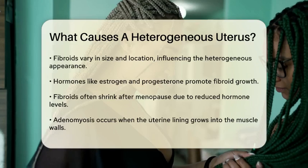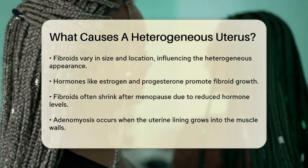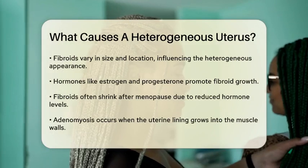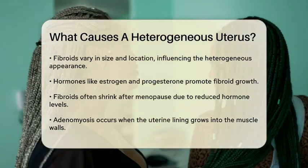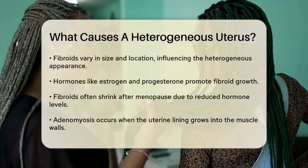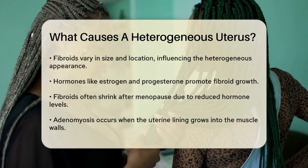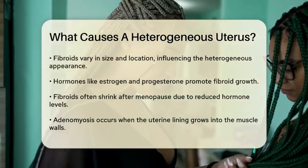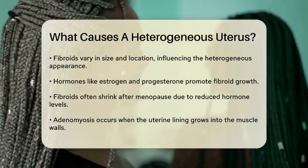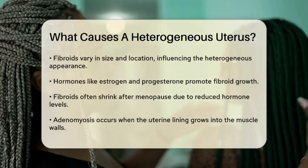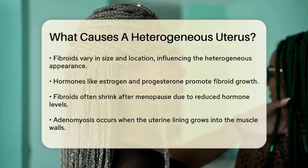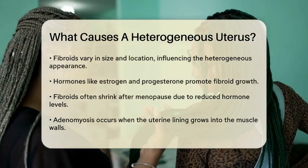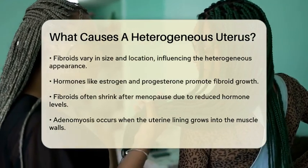Adenomyosis is another condition that can lead to a heterogeneous uterus. In this condition, the uterine lining grows into the muscle walls of the uterus, causing the uterine tissue to appear irregular and mixed on an ultrasound. Adenomyosis is often linked to prolonged exposure to estrogen, and it can be more common in women who have had multiple pregnancies or uterine surgeries.